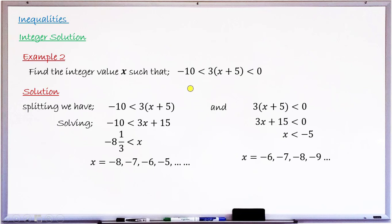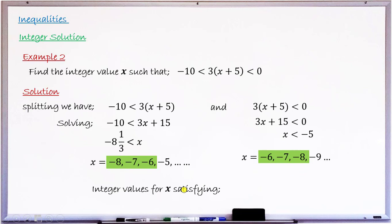Finding the integer solution of the compound inequality by intersecting both solution sets: from the first, we have minus 8, minus 7, minus 6 and increasing; from the second, minus 6, minus 7, minus 8 and decreasing. The value minus 9 is not in the first set, and minus 5 is not in the second. Therefore, the integer solution is x equals minus 8, minus 7, and minus 6.